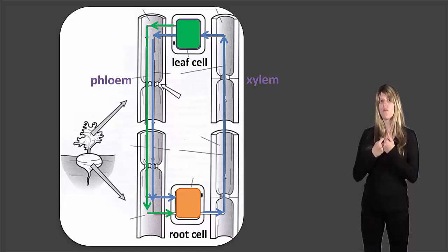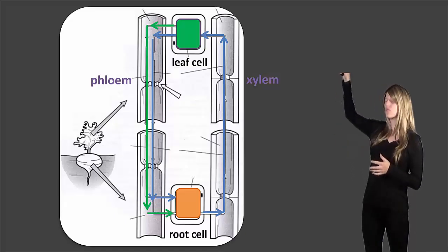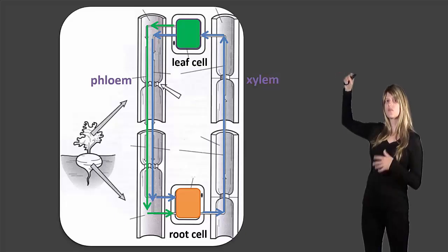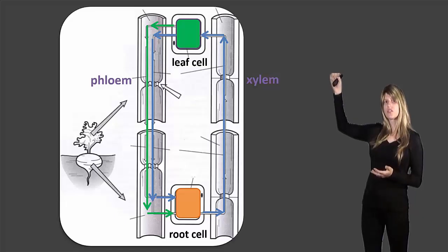So we'd get that water and minerals and then it brings it up. In this picture it shows leaf cells, but all the different cells in the plant. And then in the leaves, because of photosynthesis, sugar is created.